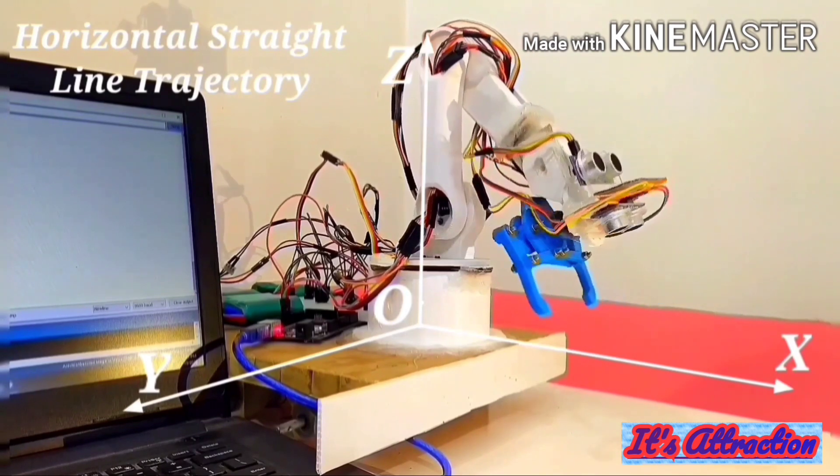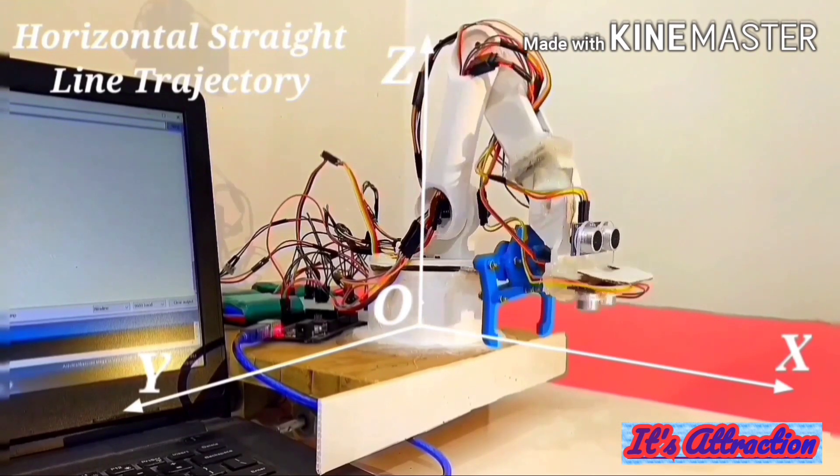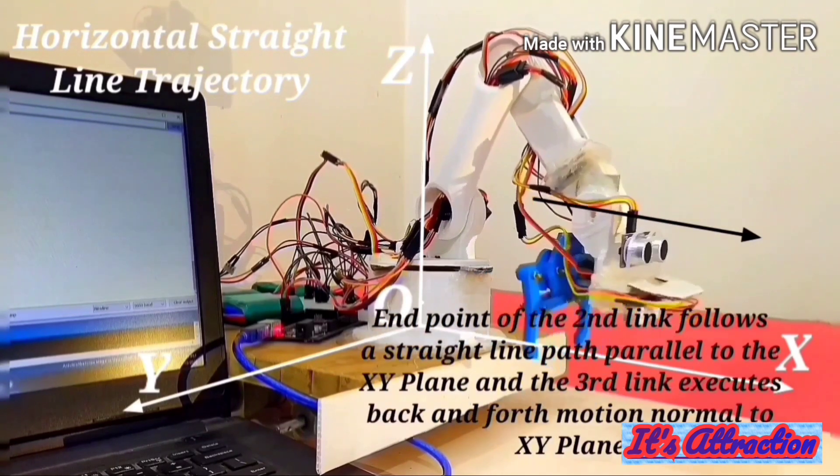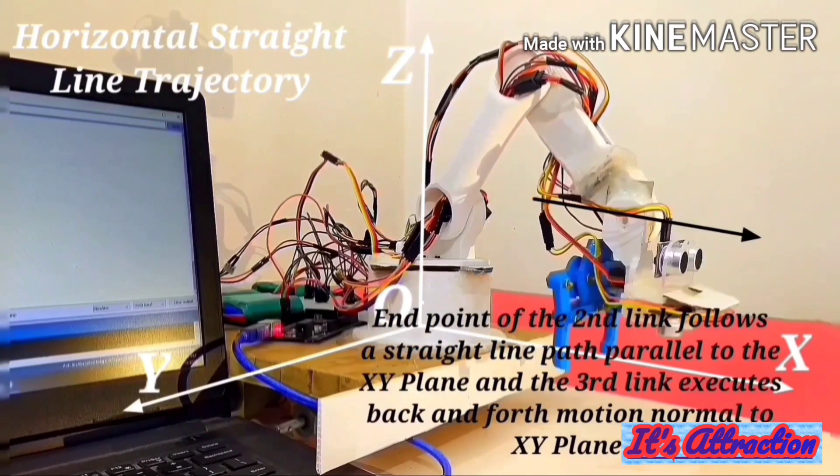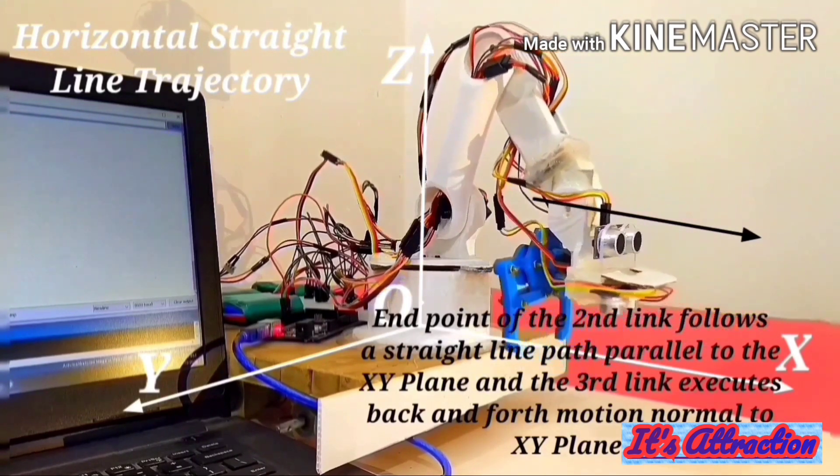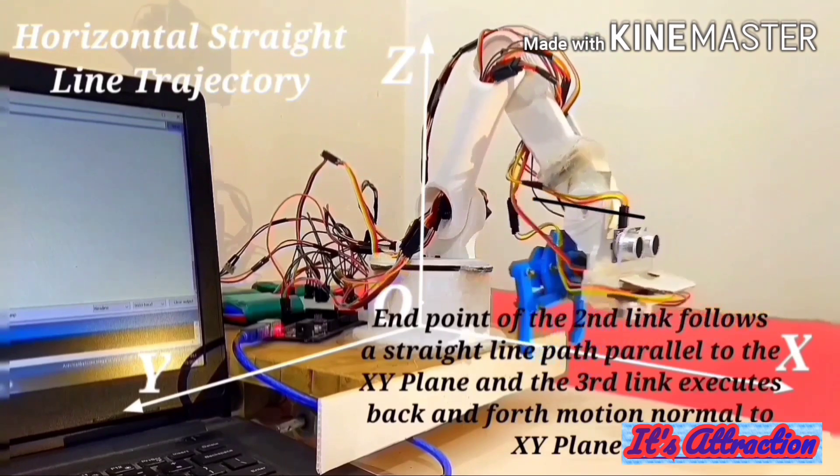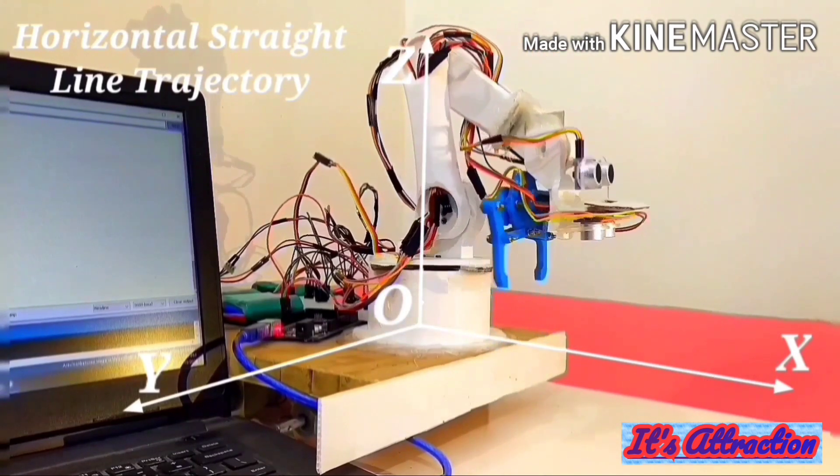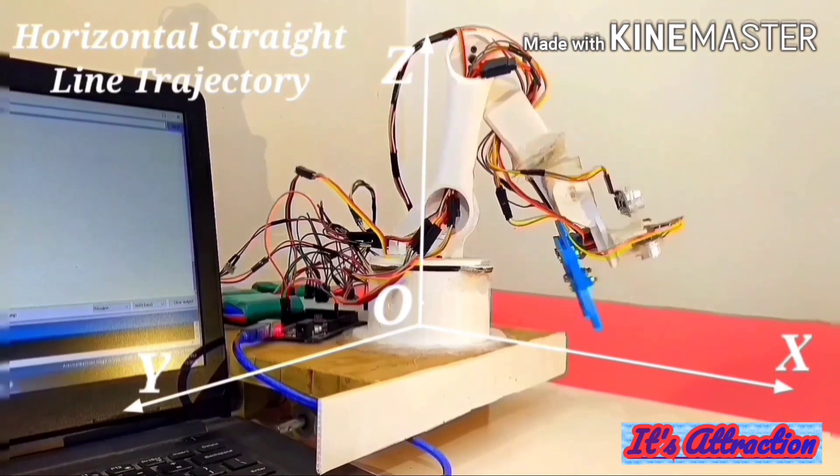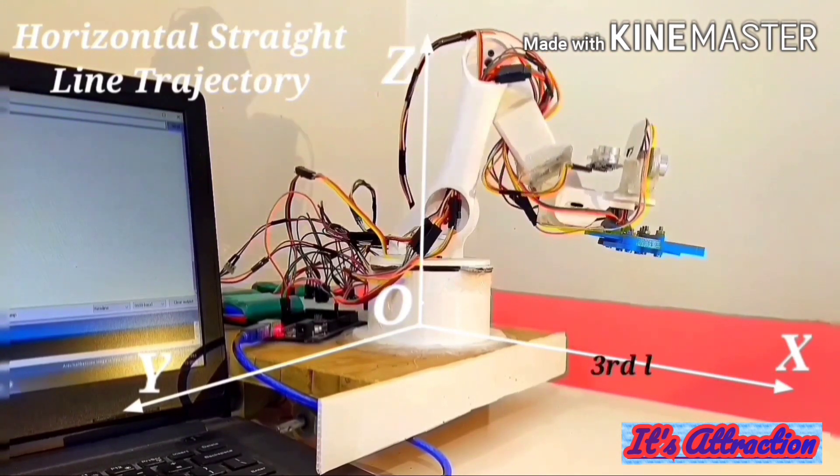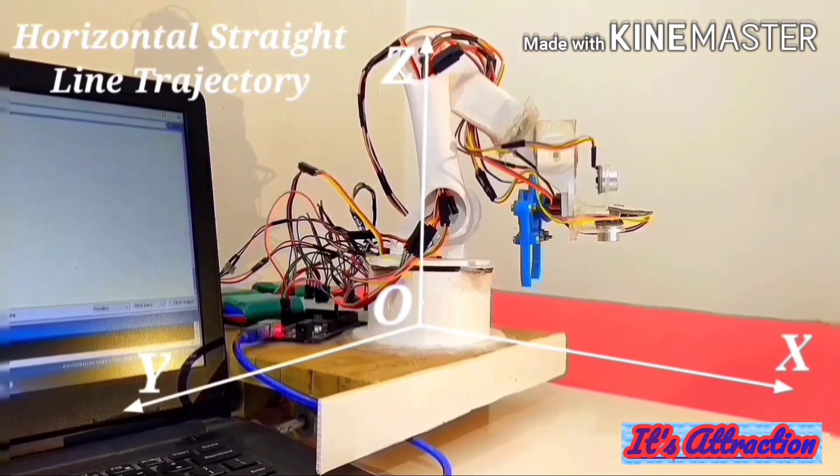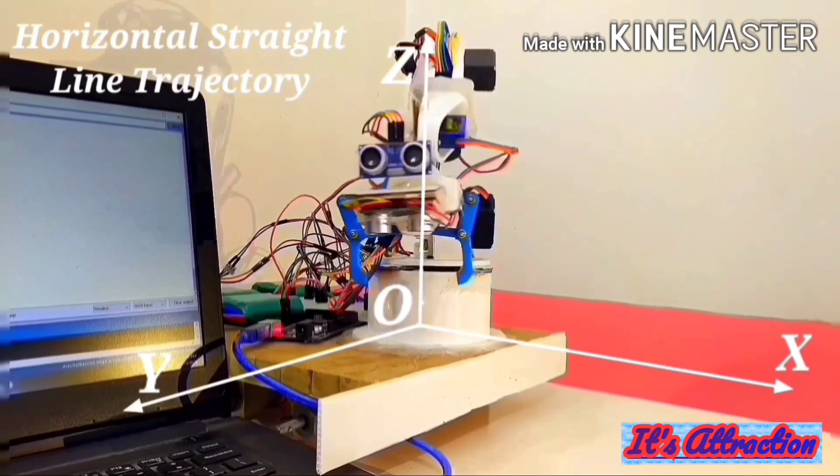In this case, the three links of the robotic arm rotate about their respective axes of rotation in such a way that the endpoint of the second link executes a straight line motion parallel to the XY plane, and the third link, that is the gripper of the robotic arm, remains perpendicular to the XY plane and executes a back and forth motion.